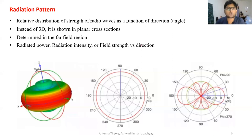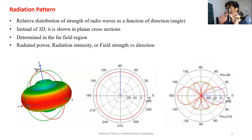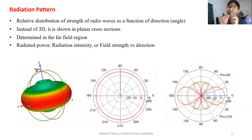Now coming to our core topic: radiation pattern represents the relative distribution of strength of any electromagnetic or radio wave as a function of direction from any particular antenna. Suppose you have a dipole antenna; it radiates maximally in radial directions at 90 degrees from its axis, and minimally — approximately zero — in the axial direction. This directional behavior can be represented as a radiation pattern.